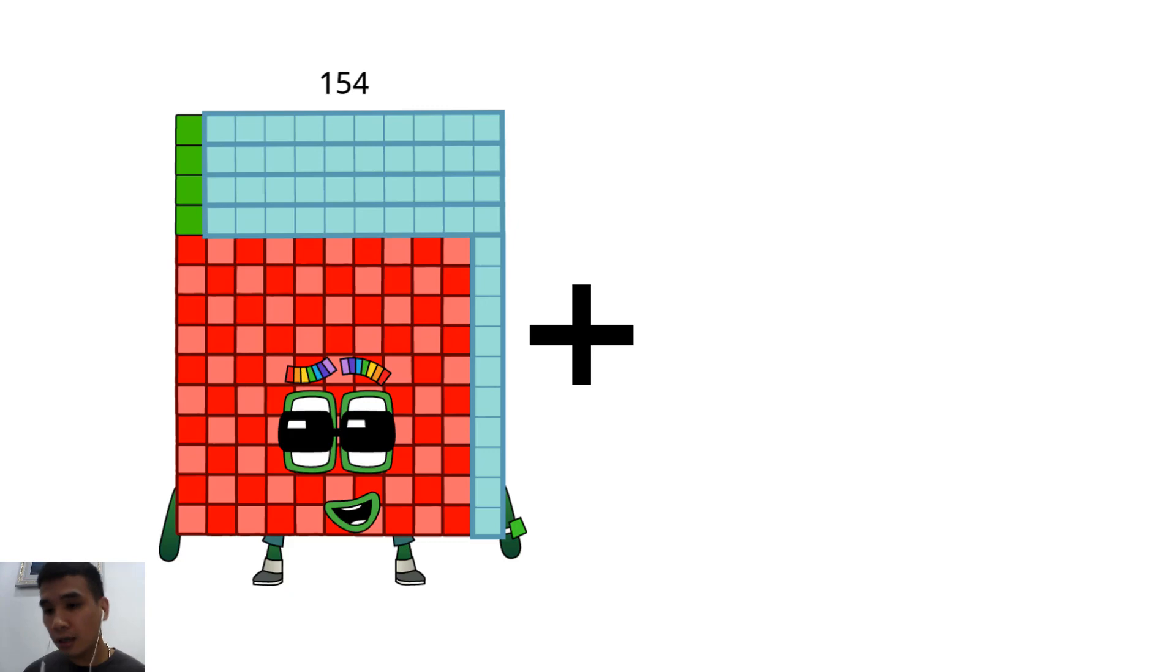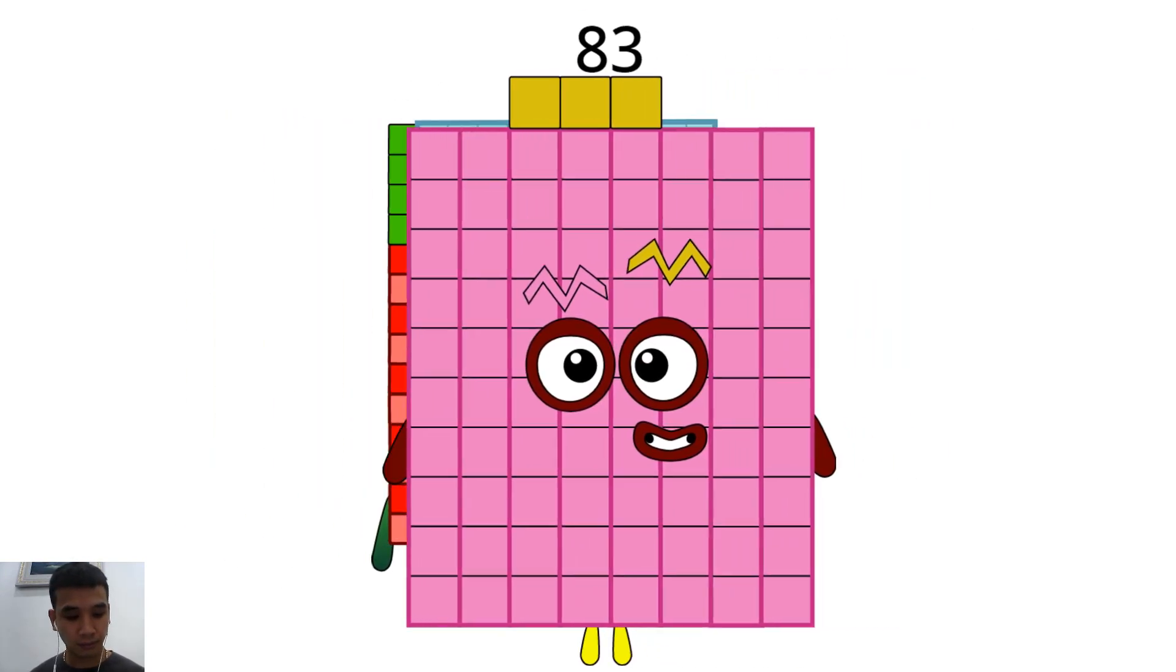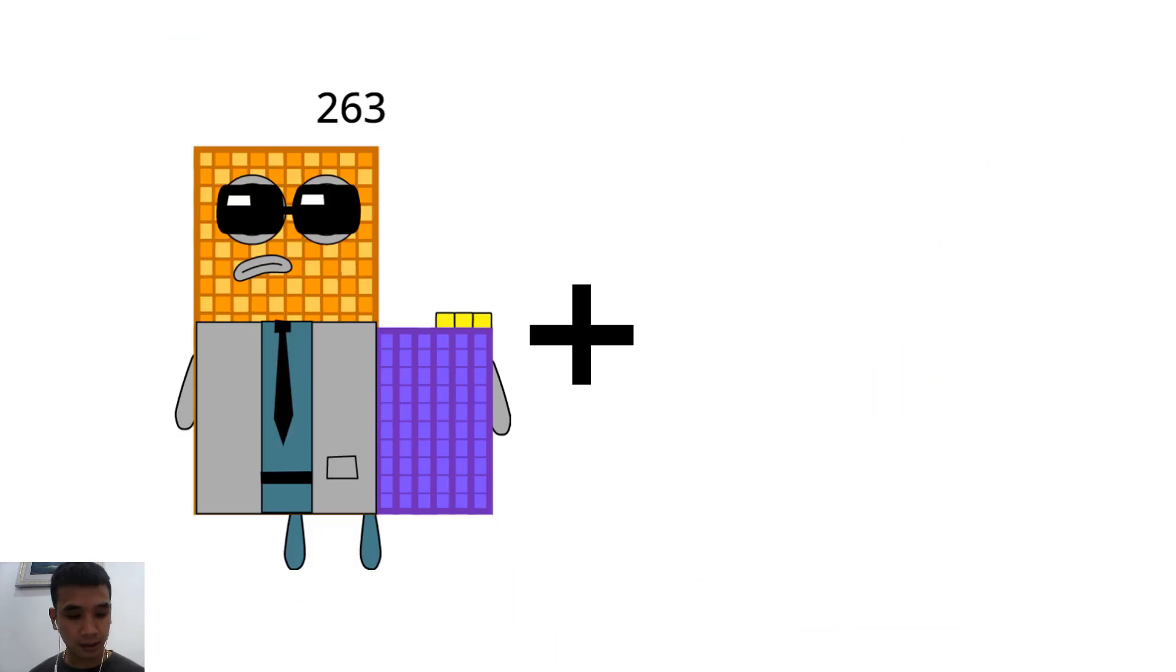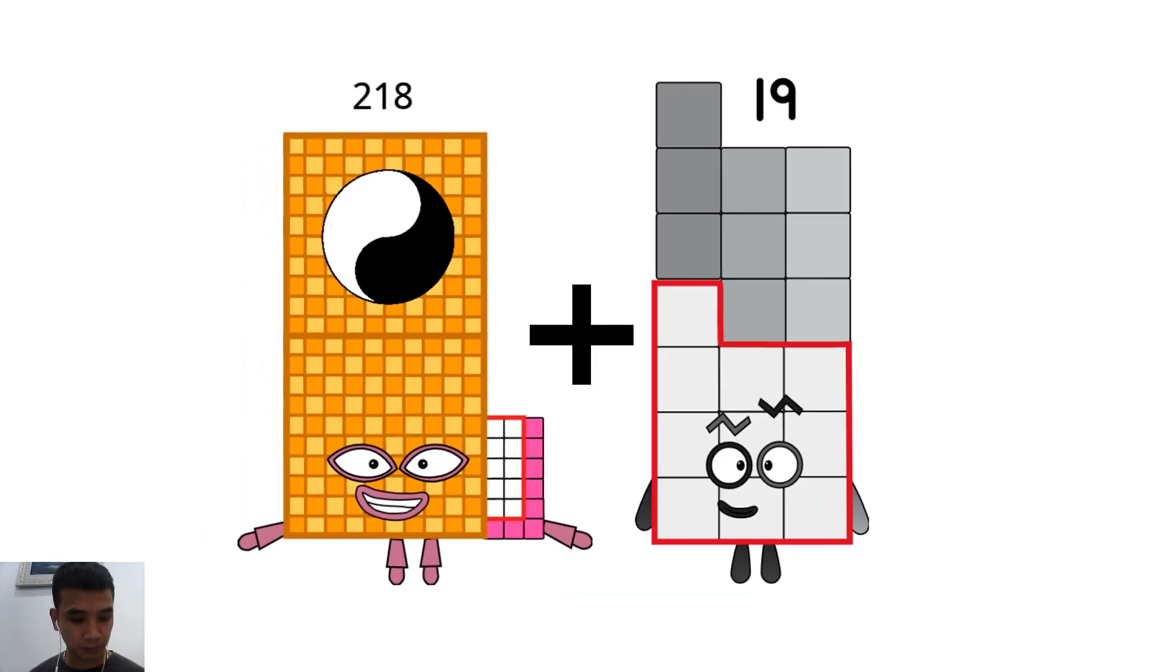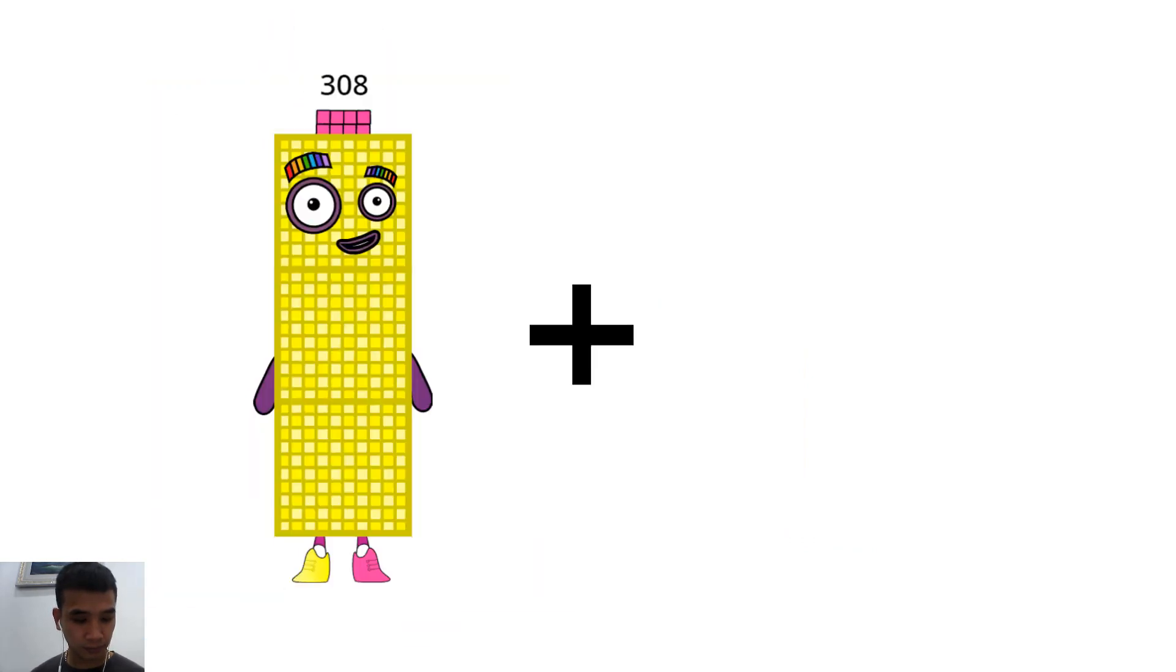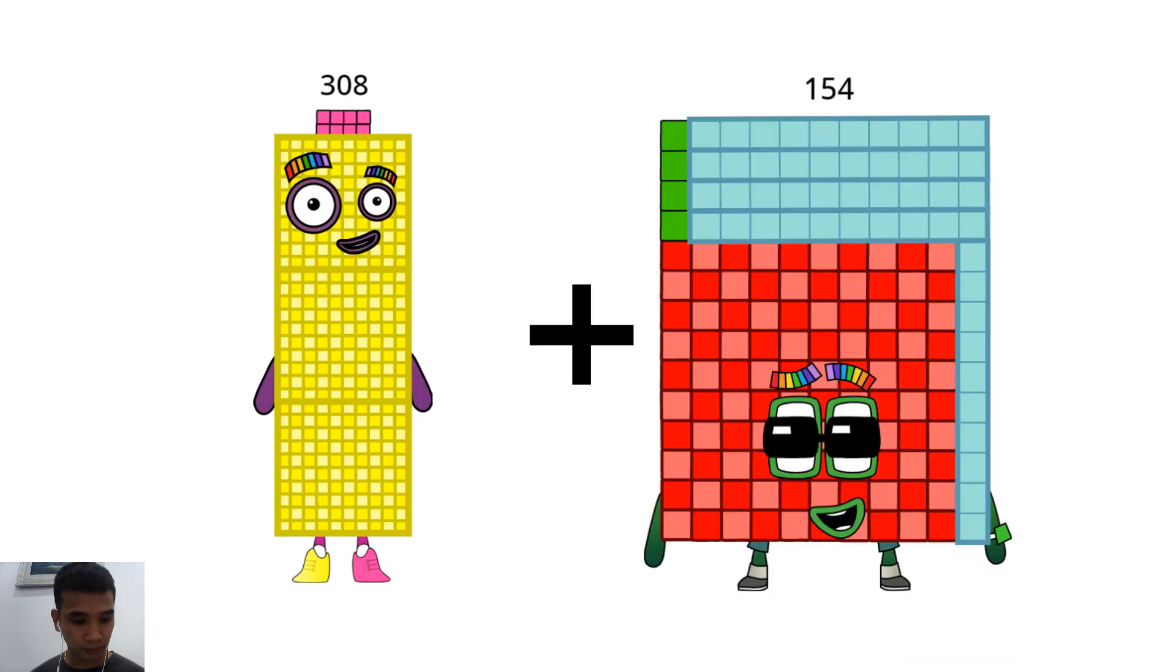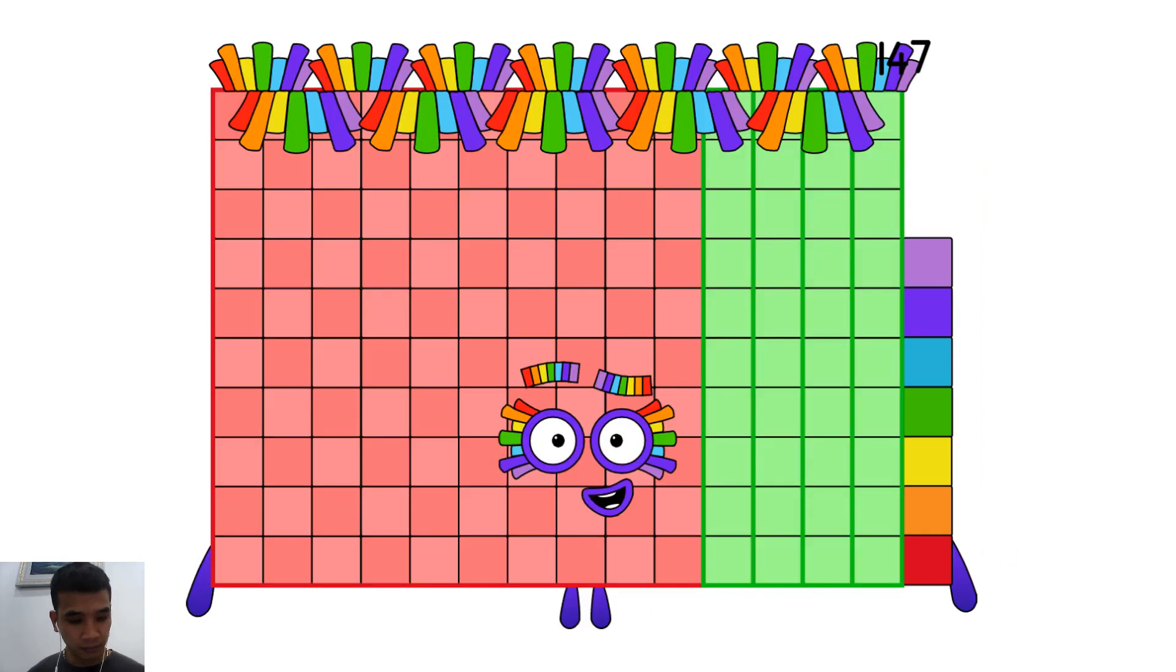154 plus 83 equals 237. 218 plus 19 equals 237. 308 plus 154 equals 147.